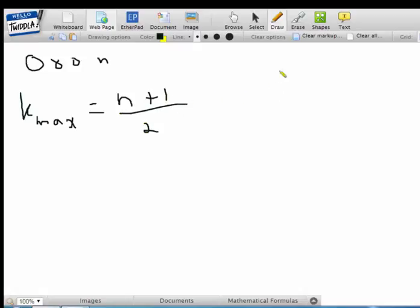And you can see that from the examples. When n was 3, k max was 2. When n was 5, k max was 3. And it just makes sense.